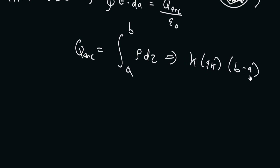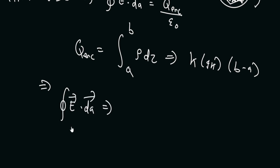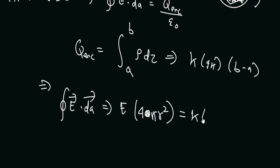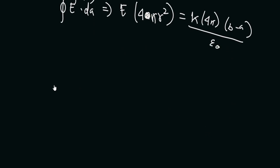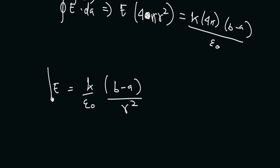With the same reasoning, E comes outside the integral and the dot product is removed. The surface area of the Gaussian sphere is 4pi r squared. So E times 4pi r squared equals k times 4pi times (B minus A) divided by epsilon naught. The 4pi terms cancel, giving our answer for the third case: E equals k(B minus A) divided by epsilon naught times r squared.